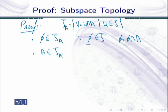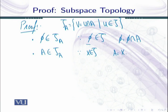Second, my claim is that A is an element of τ_A. The reason is very simple: I need an element of τ whose intersection with A gives A. Since X belongs to τ (X is an element of the topology), I can write A = X∩A. So the first condition of topology is fulfilled.